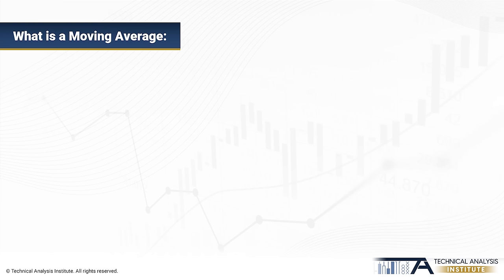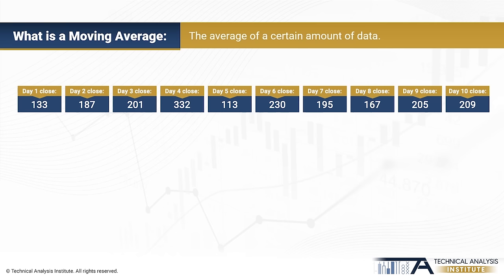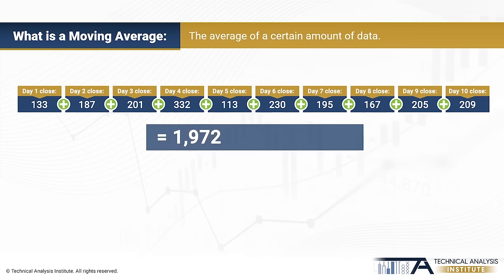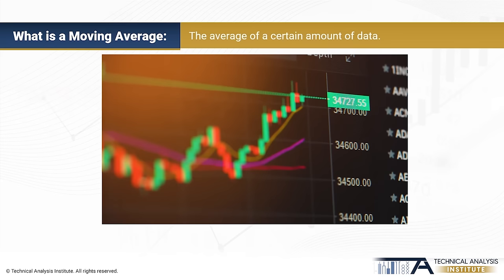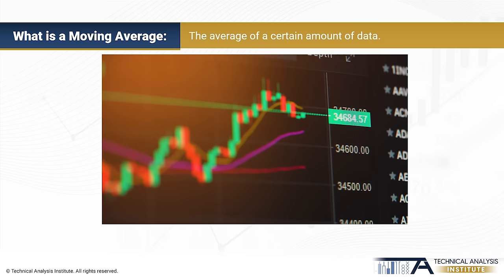I think you know what a moving average is. You probably used them before and got very disappointed with them. That's normal when you use them in the wrong way with the wrong purpose. As the name indicates, a moving average is just the average of a certain amount of data. For example, let's say that we want to know what the 10-day average of closing prices is. Then we simply add the closing prices of the last 10 days and divide the sum by 10. But when this is done on a daily basis, as we do in trading, the data will be changing and moving as prices change. Hence, it is called a moving average.